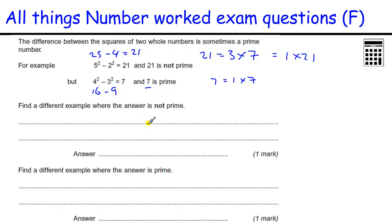Find a different example where the answer is not prime. So we've got to try lots of values. Now the best thing to do here is start very small. Whole numbers, let's start with 2 squared minus 1 squared. So that's 4 take away 1, which is 3. That's a prime number. Then we step it up a bit. 3 squared minus 1 squared, which is 9 minus 1, which is 8. That is not prime. 8 equals 2 times 4 as well as 1 times 8. Find a different example where the answer is prime. Well we've done that already, so 2 squared minus 1 squared. There are lots of answers for each of those.